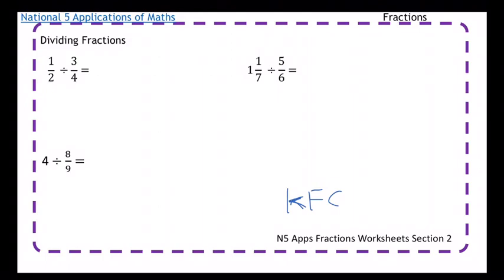Keep means we keep the first fraction the same. F means we flip the second fraction. And C stands for change the divide to a multiply. So, keep - I'm going to keep 1 over 2 the same. I'm going to flip 3 over 4 to 4 over 3. I'm going to change the divide to a multiply.